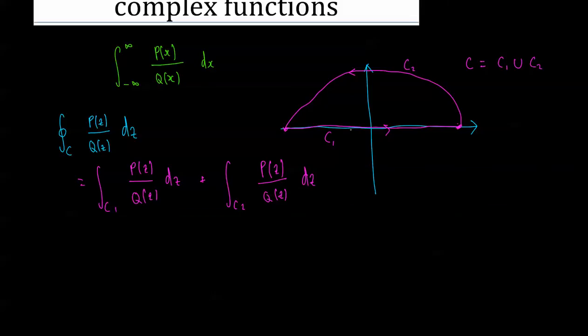So along c1, we can see that, well, remember z is always equal to x plus i y. Okay, and along c1, we're on the real axis, or you can clearly see that y is equal to zero along c1.